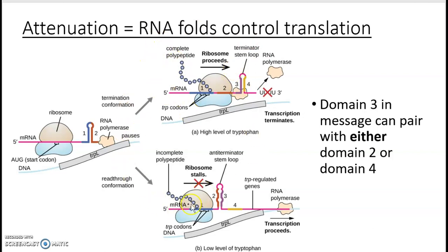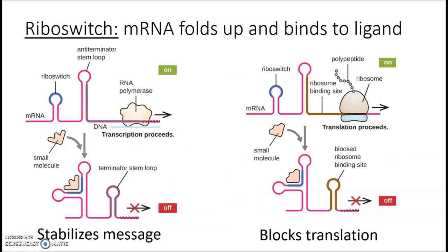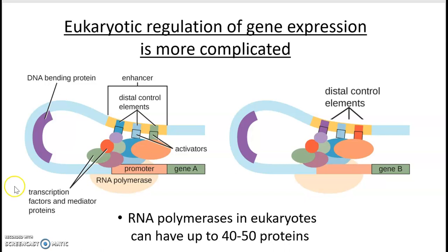If you stop transcription, that also stops translation — so if you've got plenty of tryptophan, why make more? When tryptophan is absent, the ribosome stalls, causing a different bonding configuration between those domains. We can also look at transcription and translation control with riboswitches, and regulation in eukaryotic cells, which is considerably more complicated.